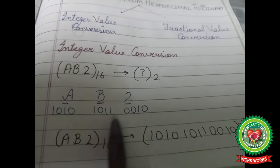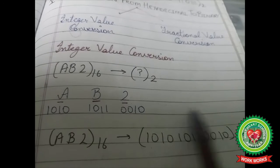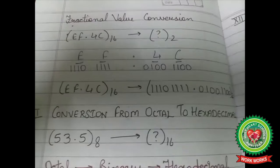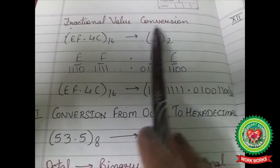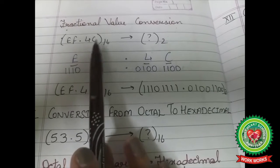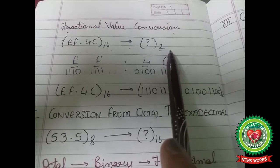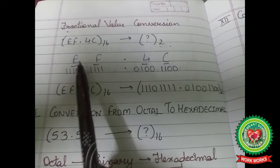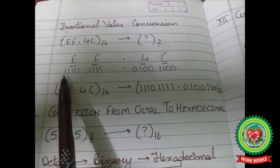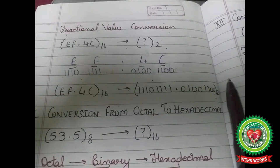Now we combine all these digits to form a single binary number, which is the equivalent of AB2 base 16. In the same way, we do fractional value conversion. The number EF.4C base 16 is converted to binary by writing the binary equivalent for each digit and combining them into a single binary number.